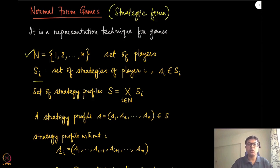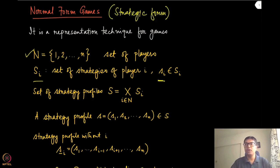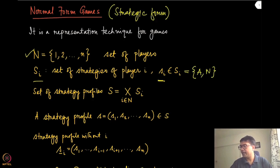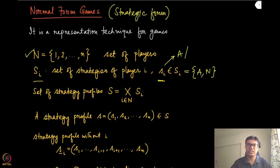Going back to our example of the neighboring kingdoms dilemma, the set S_i was either agriculture or war for both players, and s_i was whichever strategy that player was picking — either A or W.